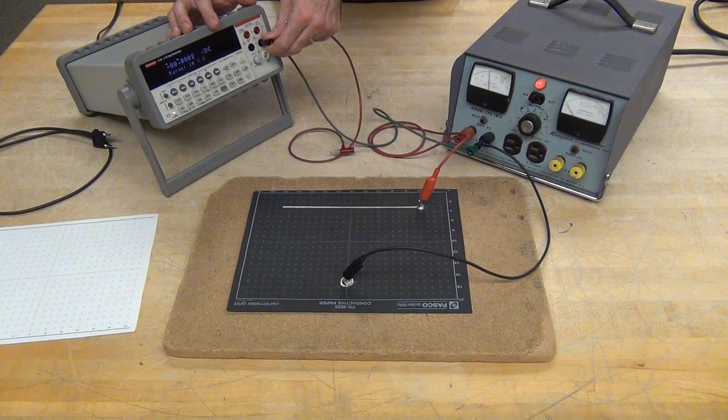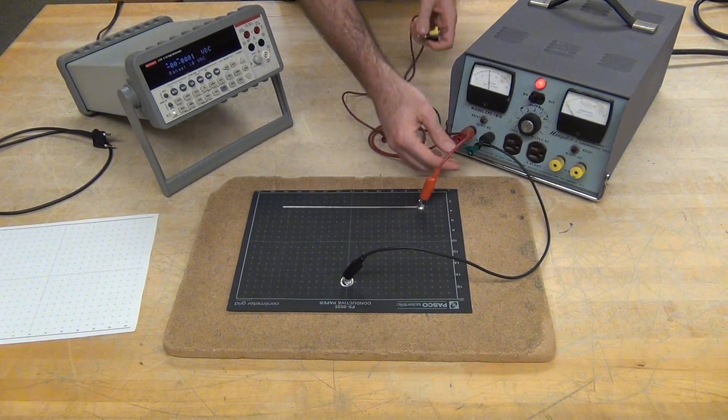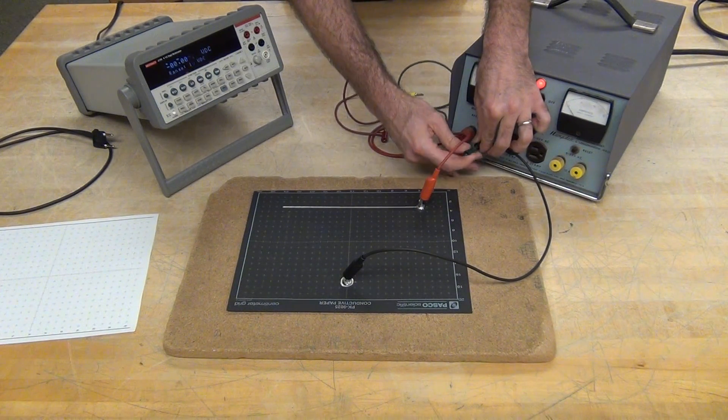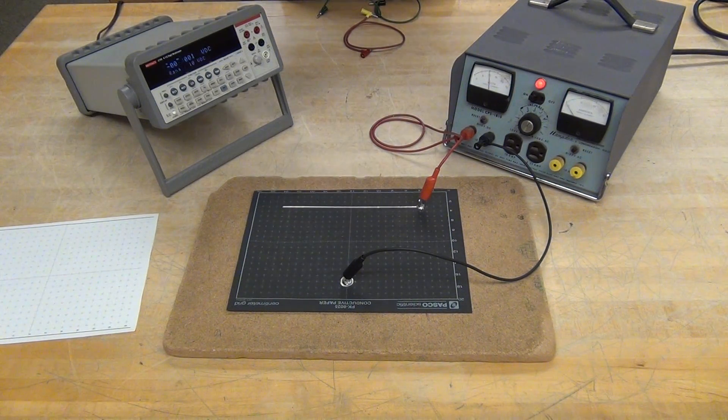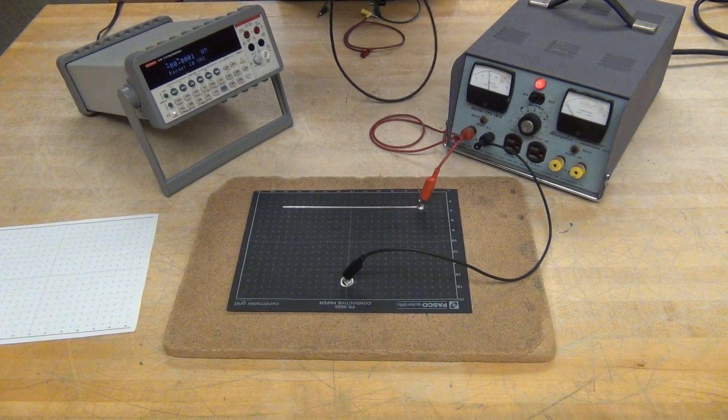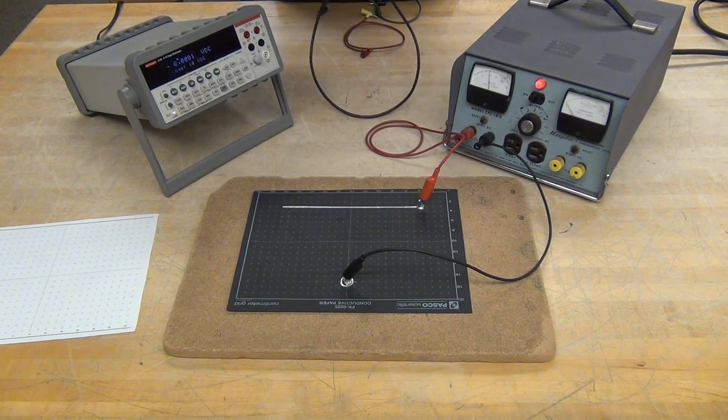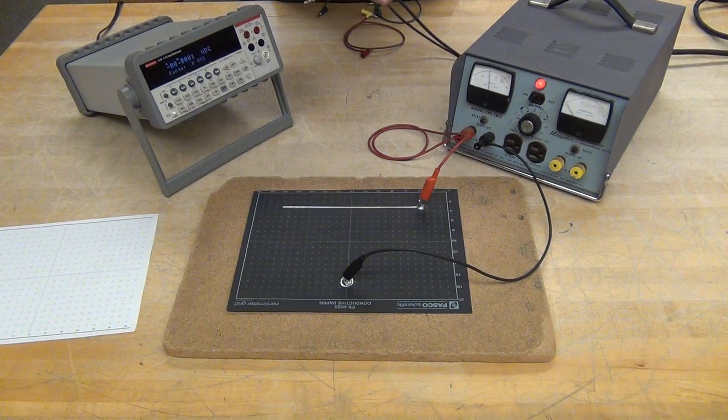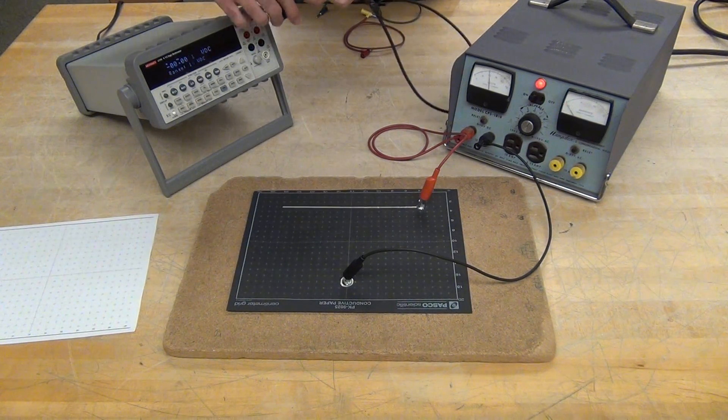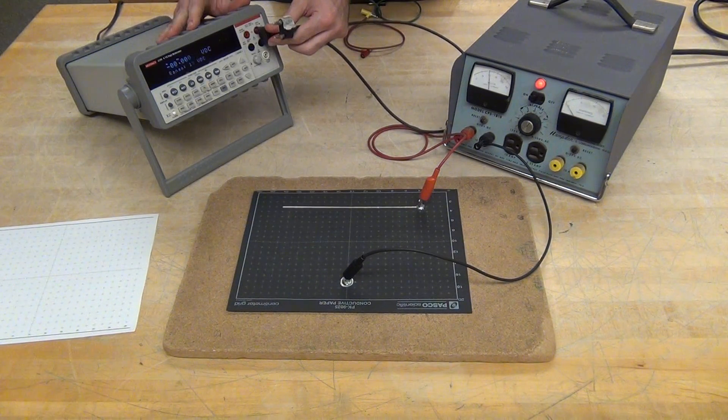So I'm going to unplug the two banana plugs and replace it with a dual banana plug. That has the advantage of having two probes at a set distance. One of them is marked with a ground tab. It says GND. I want to put that in the black side on low.